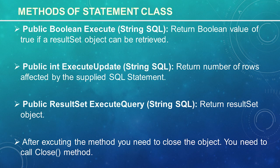The second one is int executeUpdate(String SQL). This method returns the number of rows affected by the execution of the SQL statement. Use this method for SQL statements where you expect a number of rows affected, for example an insert, update, or delete statement. The third one is ResultSet executeQuery(String SQL). This method returns a result set object. Use this method when you expect to get a result set, as with a select statement.